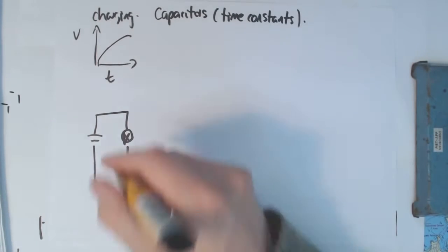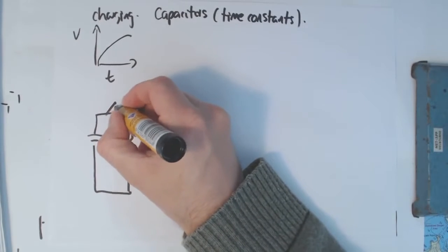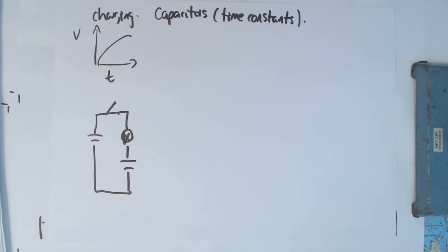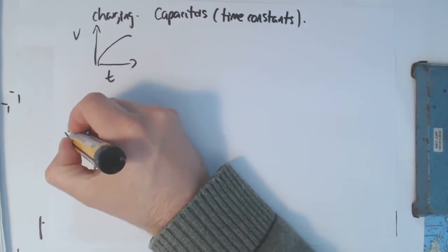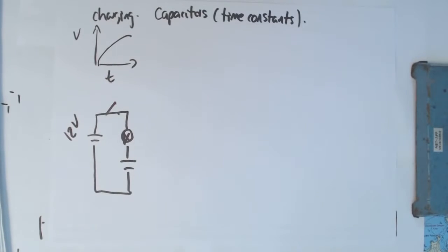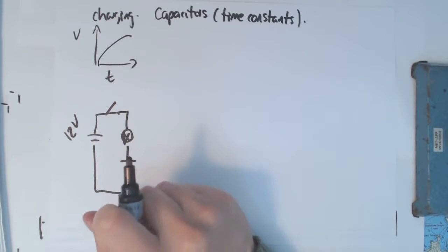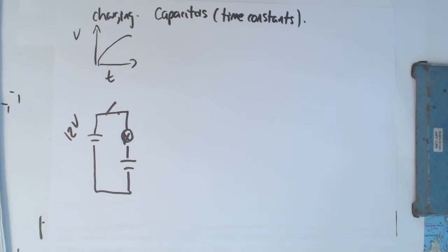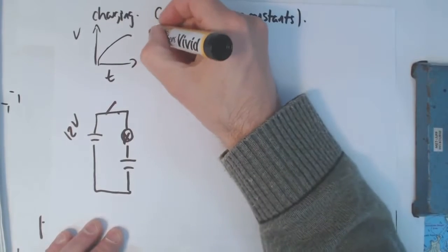The lamp, when we open the switch and then close it, the capacitor is going to charge. At first, the capacitor has got, let's say that's 12 volts. At first, the capacitor's got zero volts, and the lamp is nice and bright. As the capacitor charges up, less current flows, and it gets to a point when no current flows. The lamp will slowly dim.